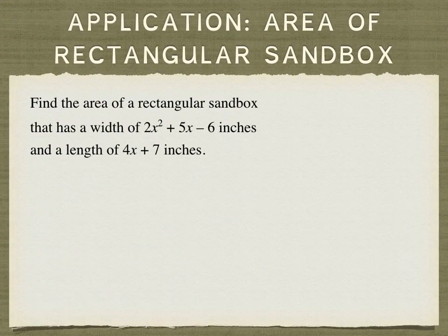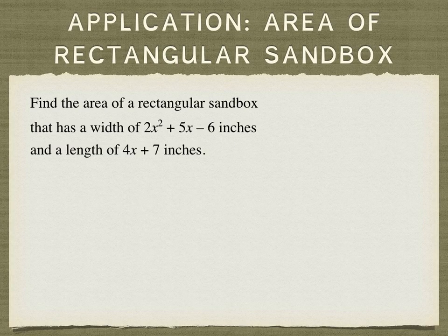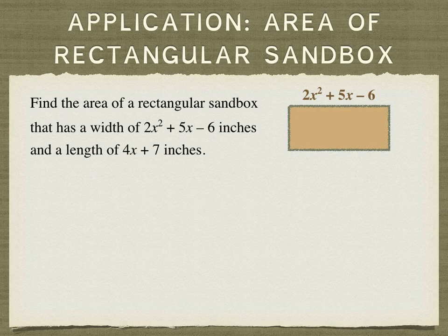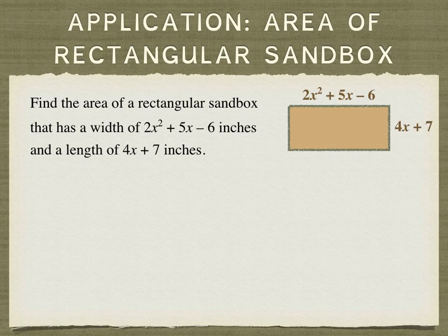And let's do a word problem. Find the area of a rectangular sandbox that has a width of 2x squared plus 5x minus 6 and a length of 4x plus 3 inches.